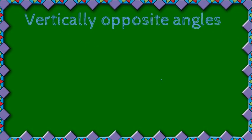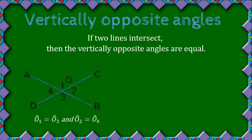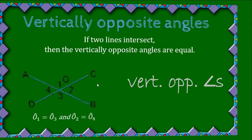Then we have vertically opposite angles. If two lines intersect, the vertically opposite angles are equal. In this example, if AB and DC intersect, then O1 and O3 are equal, and O4 and O2 are equal. The reason you give when using this is 'vertically opposite angles'.